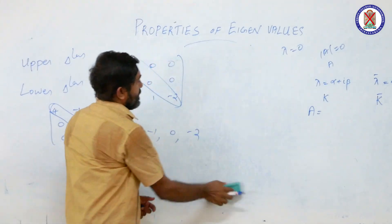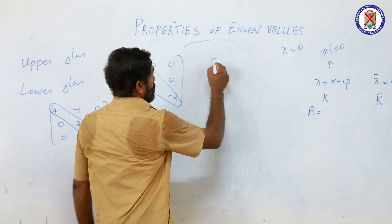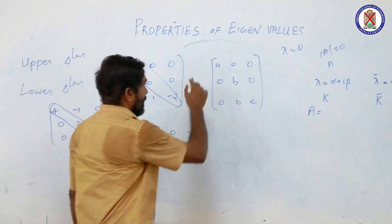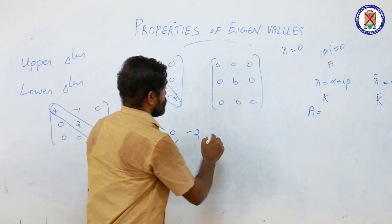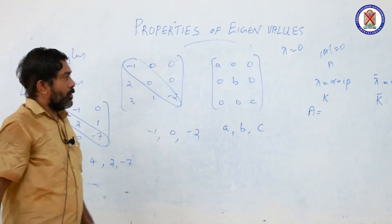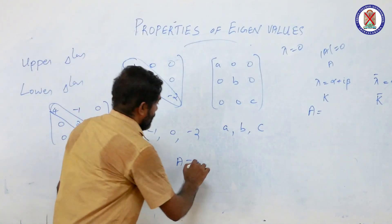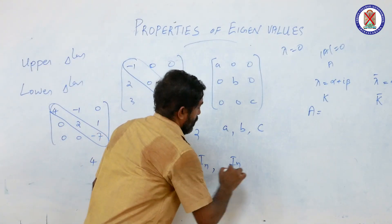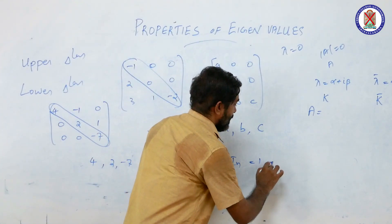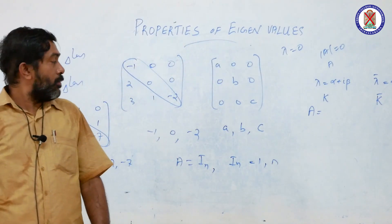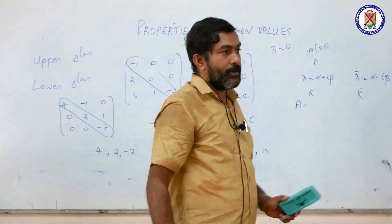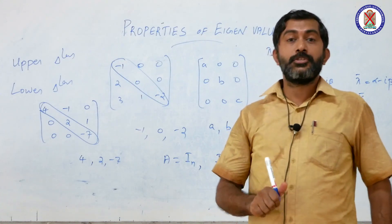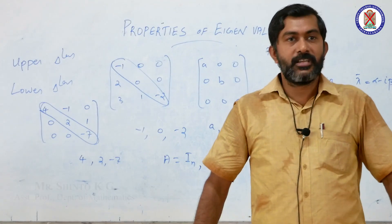Extending this result, a diagonal matrix with entries A, B, C has eigenvalues A, B, and C. As a special case, the unit (identity) matrix of order n has all eigenvalues equal to 1 with multiplicity n. These are some of the key properties of eigenvalues and eigenvectors that make it easier to evaluate them for certain matrices.